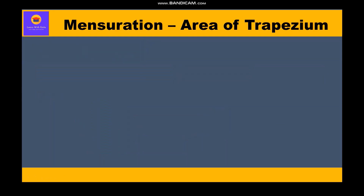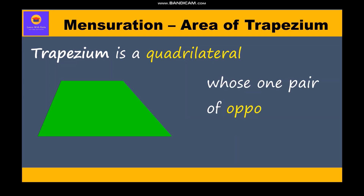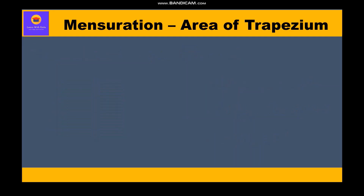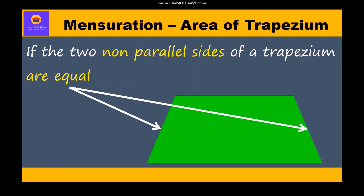Now let us study the area of a trapezium. A trapezium is a quadrilateral whose one pair of opposite sides are parallel. If the two non-parallel sides of a trapezium are equal, it is called an isosceles trapezium.